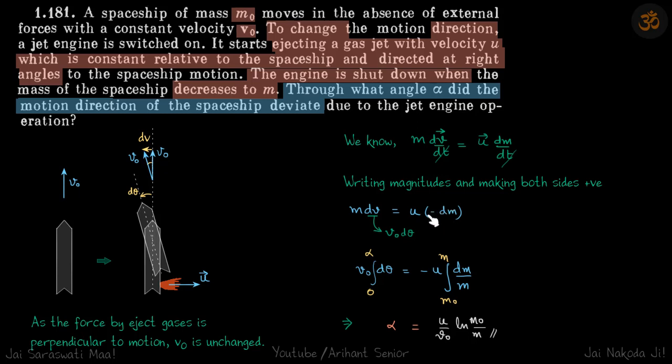Why this minus sign? Because now we are talking about magnitudes. So this is in vector form but here we are writing magnitudes. To make both sides positive we will just add a minus sign here.